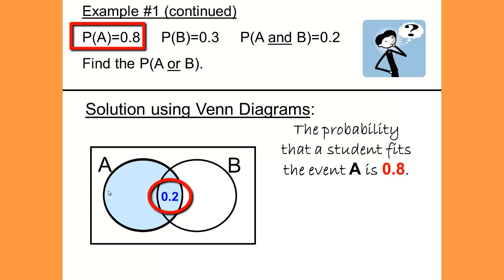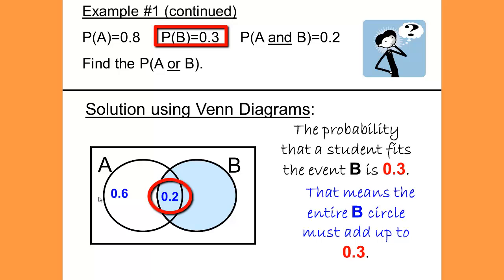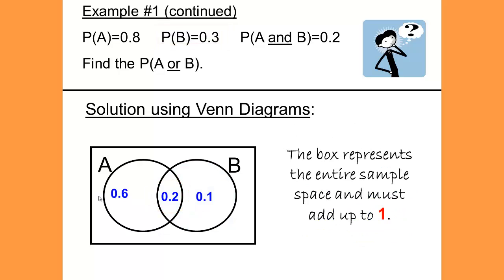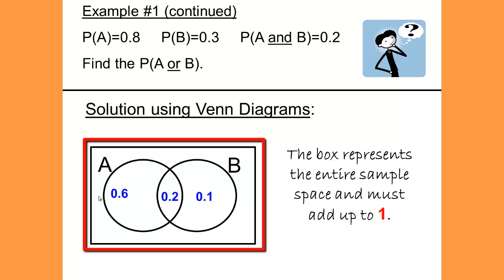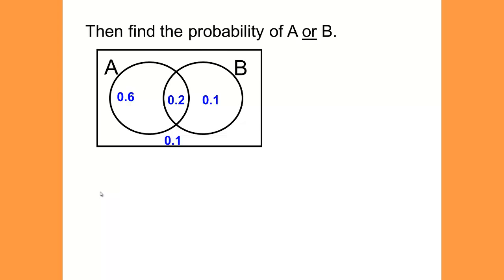The probability that a student fits into event B is 0.3. And everything in circle B must add up to 0.3, but 0.2 is already in 0.3, so we must subtract out the 0.2, which leaves us 0.1. Now the entire box represents our sample space, and the sample space for probability would add up to be 1. So 1 minus 0.6 minus 0.2 minus 0.1 leaves us an additional 0.1 that would be outside of the circles A and B. We have now completed and filled in our Venn diagram completely.